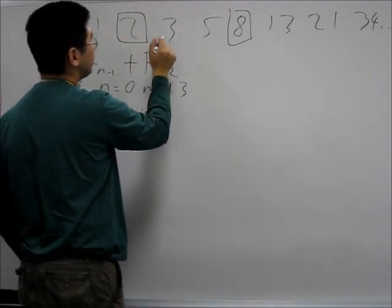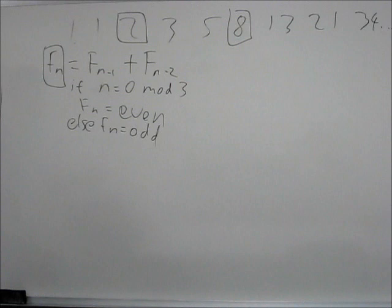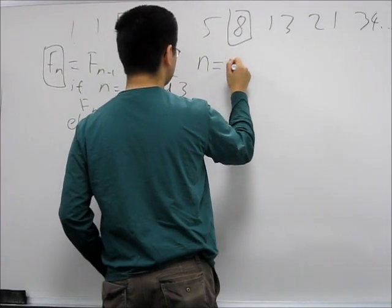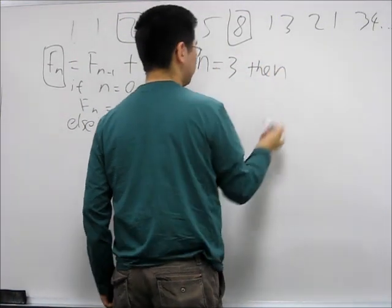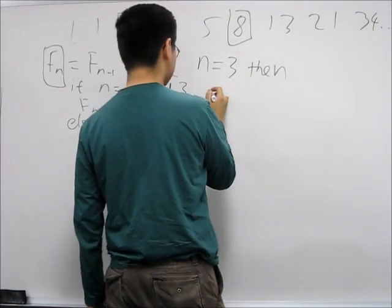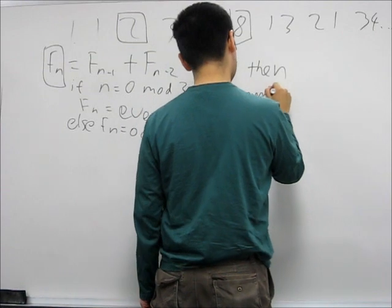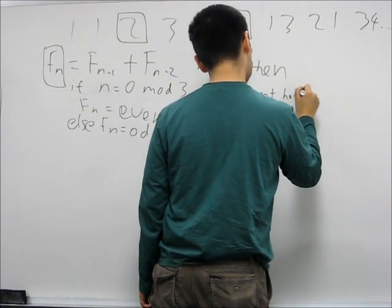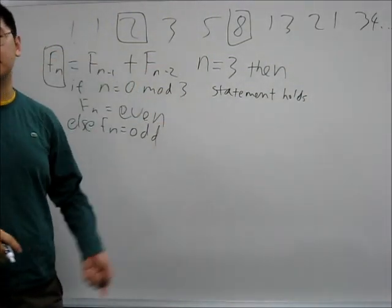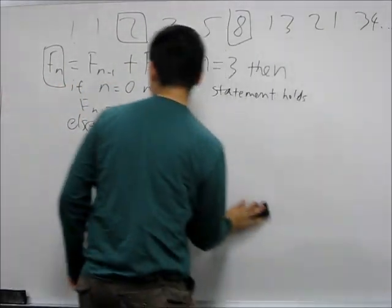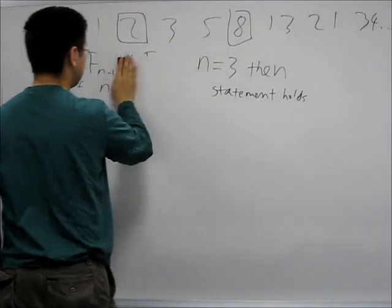And 1, 1, 3, 5 — which are the first, second, fourth, and fifth terms — are all odd. So we can technically assume a base step where if n is equal to 3, then the theory holds. But what happens when we go beyond into the hundredths or thousandths Fibonacci number? What we can actually do is use strong induction.